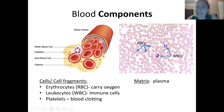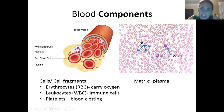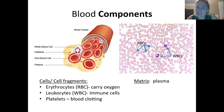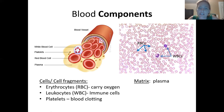The last formed element is the platelets, also known as thrombocytes — tiny little purple dots in between the other cells.